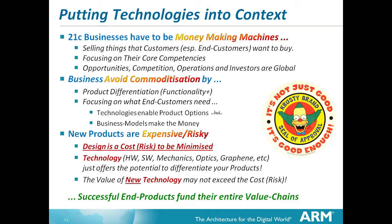The value of new technology may not exceed the cost risk. Successful end products fund their entire value chains — and that includes university lecturers, researchers, and professors. Nobody is outside the value chain of products. If you're doing something valuable, it contributes and moves up the food chain, hitting an exploitation channel that puts money back down the whole avenue. That's why you don't have any problem getting research funding, because people have seen that the outcomes from that group are valuable.